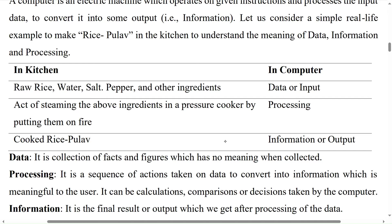What process do you follow to make rice pulao? You steam the above ingredients in a pressure cooker by putting them on fire. Similarly, in a computer, we process the data or input. Finally, what is the output? Cooked rice pulao is your output from the kitchen, and meaningful information is your output from the computer.